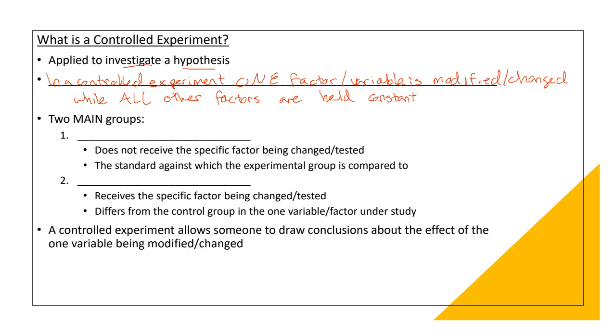In a controlled experiment, we have two main groups. We have something called the control group. The control group does not receive the specific factor being changed or being tested. It's going to work as a standard against which the experimental group is going to be compared to.